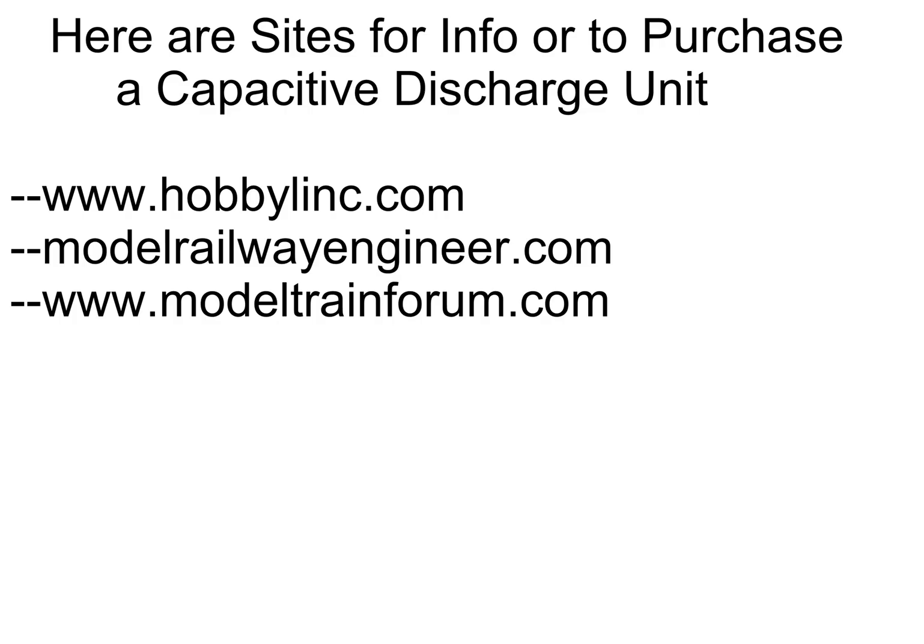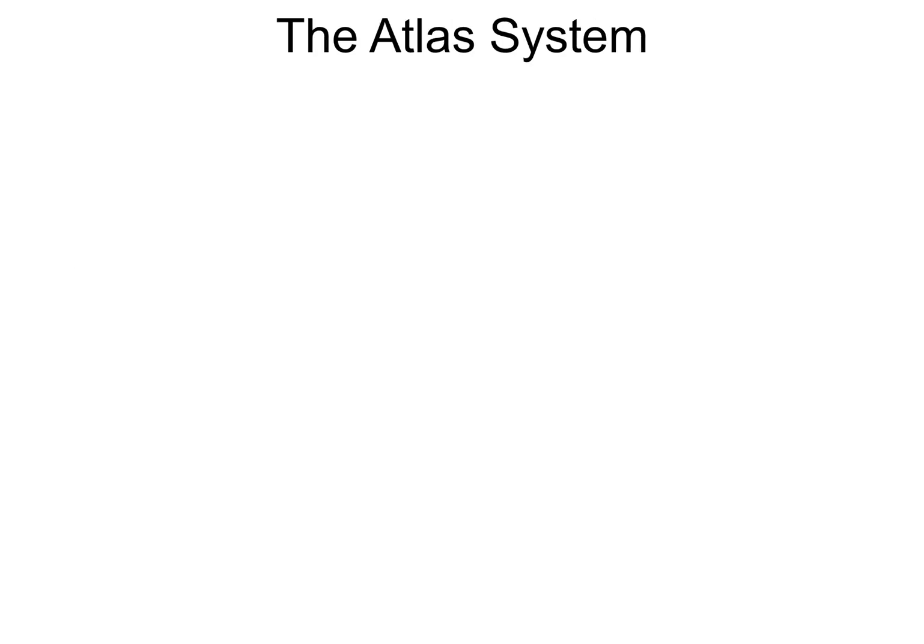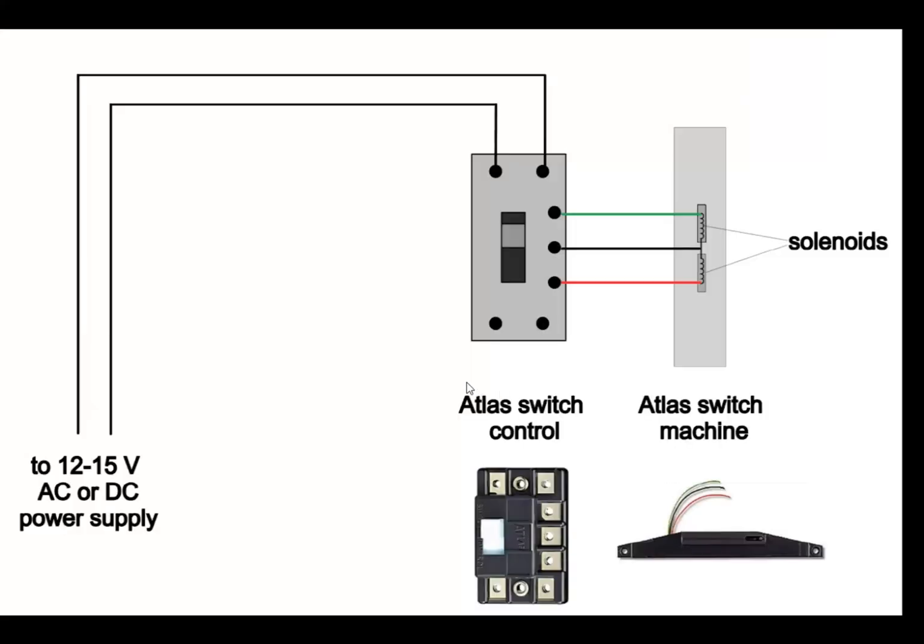Note I'm not associated with any of these companies, but first I want to talk briefly about how you connect an Atlas switch control unit to your switches. This is a schematic for connecting an Atlas switch control to an Atlas switch machine. You start out with a power supply - they recommend 12 to 15 volts AC or DC. The two wires go into these two connections and the three wires go to the switch machine.